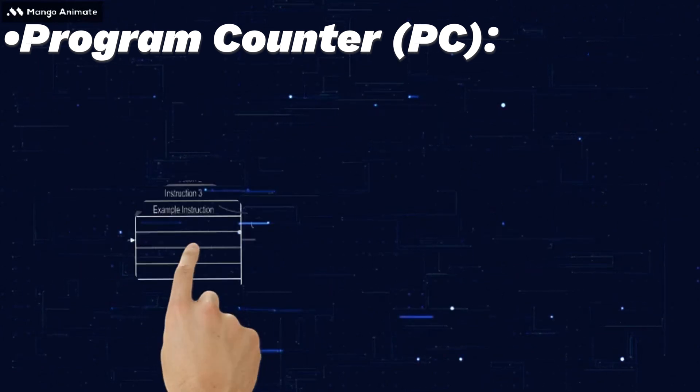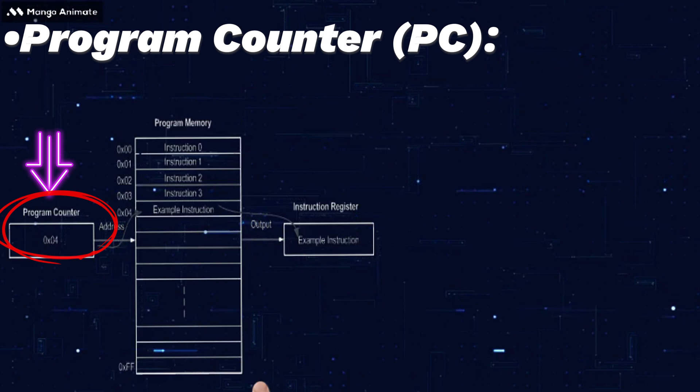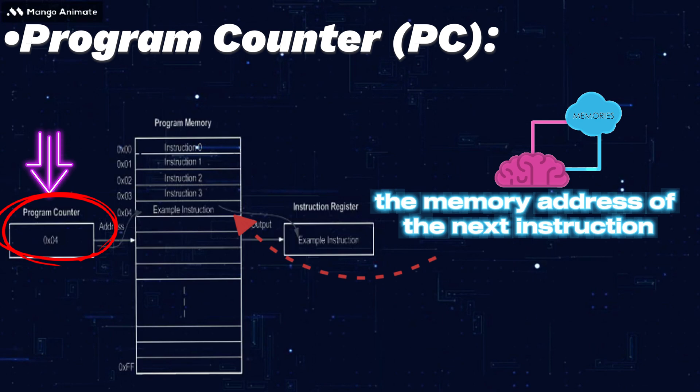Program counter or PC: The program counter keeps track of the memory address of the next instruction to be fetched and executed.